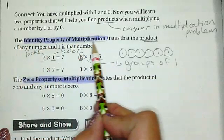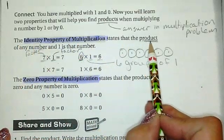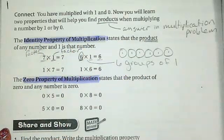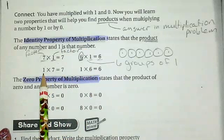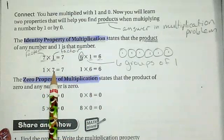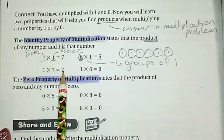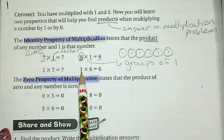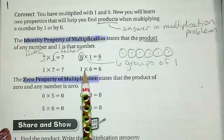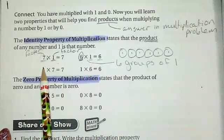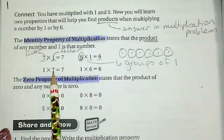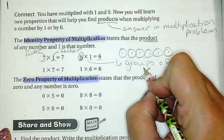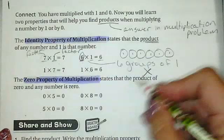The identity property of multiplication states that the product of any number and one is that number. Here they flipped our factors, and now we have one times seven equals seven, or one times six equals six. Remember, this is the same as saying one group of six, or one group of seven. The multiplication sign means groups of.